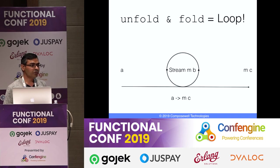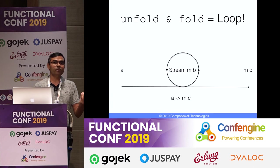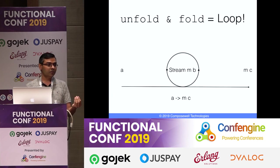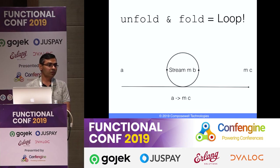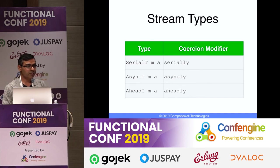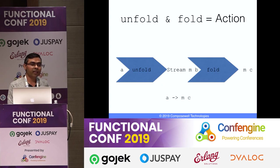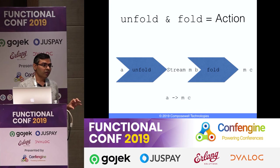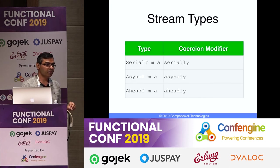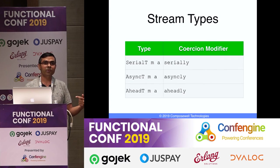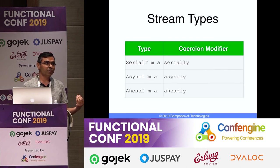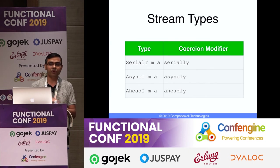The concrete stream types exposed are Serial T (serial stream), Async T (one of the concurrent types), and Ahead T (another concurrent type with different concurrency behavior). These correspond to different behaviors of concurrency, which we'll see later.